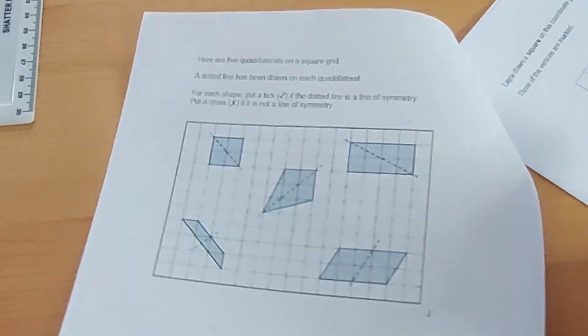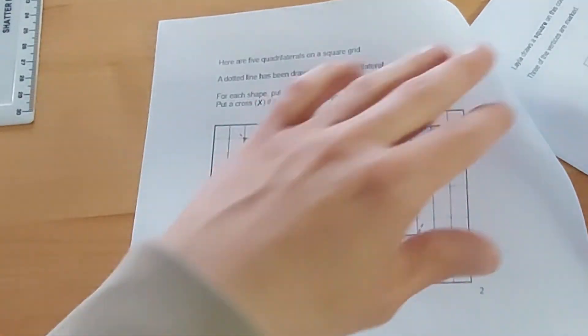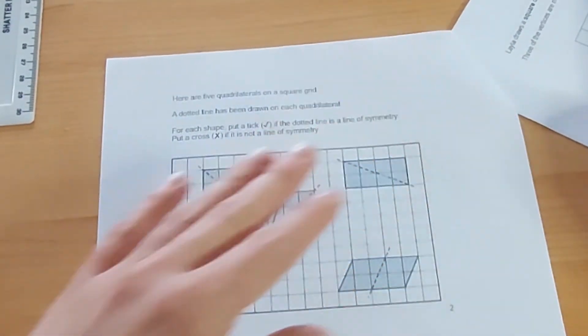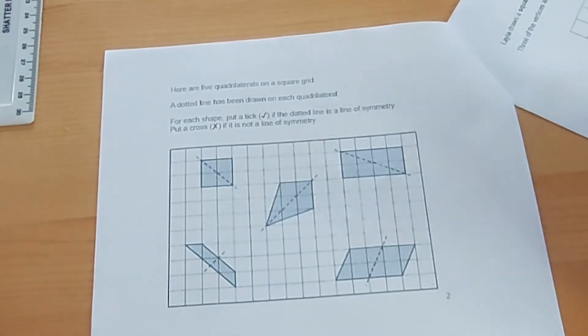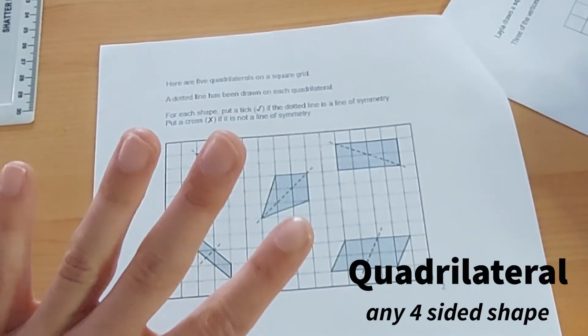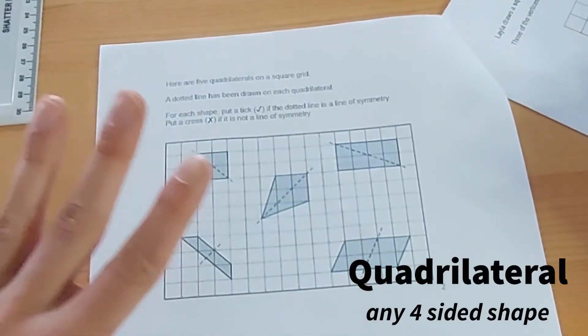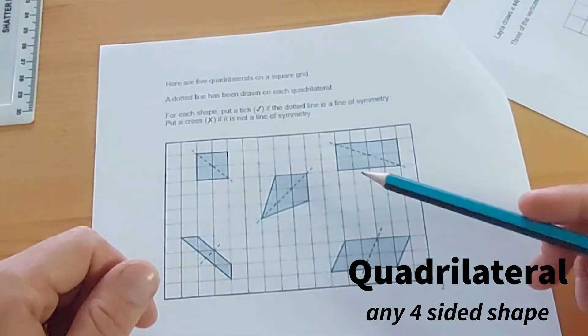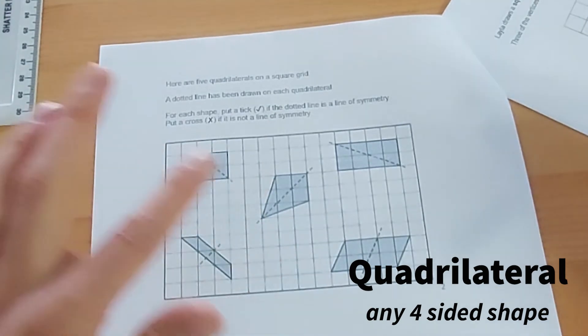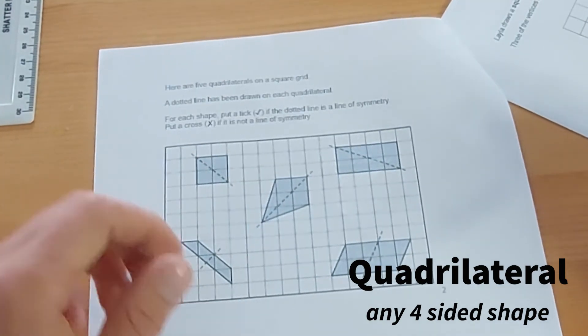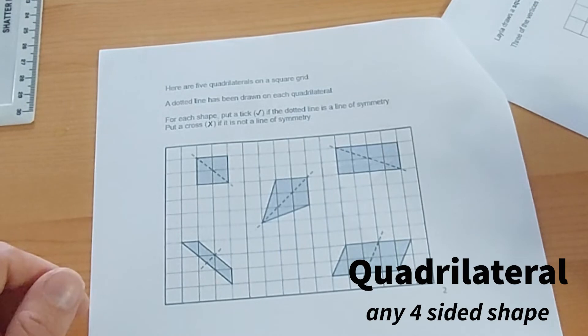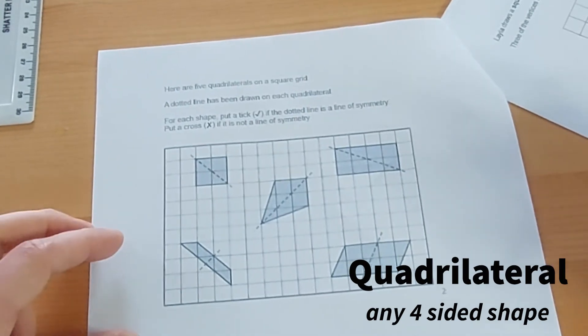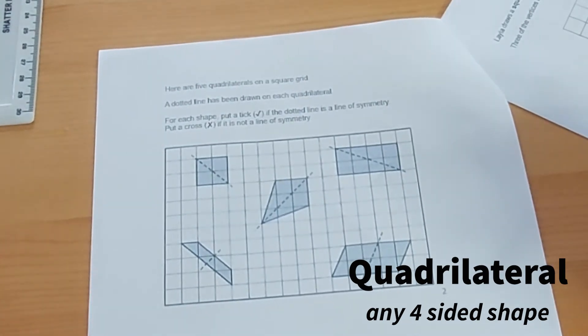So once again, another type of symmetry question. We've got, here are five quadrilaterals. Quadrilateral just means a four-sided shape. Doesn't have to have four equal sides either, like a square or two equal sides like a rectangle. Just has to have four sides. So all of these shapes have four sides. And it says, for each shape, put a tick if a dotted line is a line of symmetry. Put a cross if it is not a line of symmetry. So once again, for this question, you'd need to use your mirror to check.